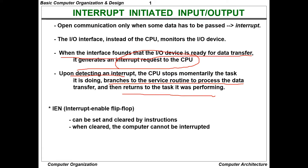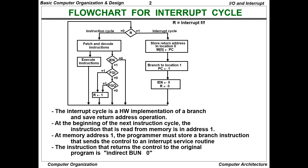To know that an interrupt has occurred, we have an interrupt enable flip-flop, called IEN. When IEN is set to 1, it means an interrupt has occurred. IEN can be set and cleared by instruction. When the interrupt is solved, IEN is changed to 0. When IEN equals 0, the computer cannot be interrupted.